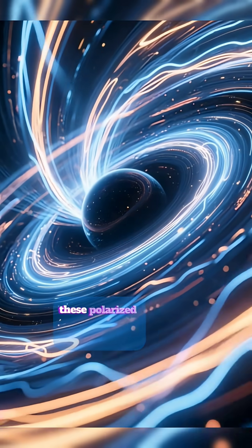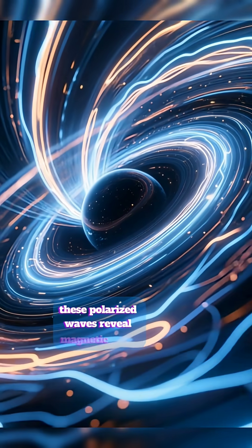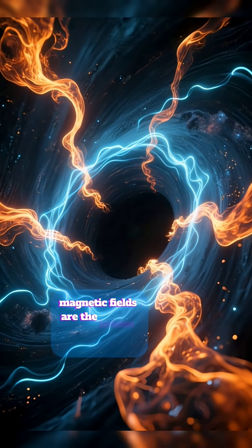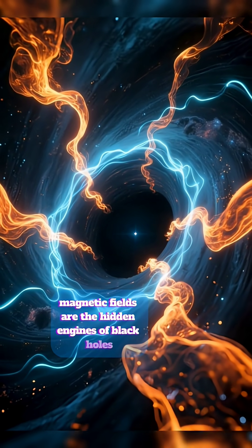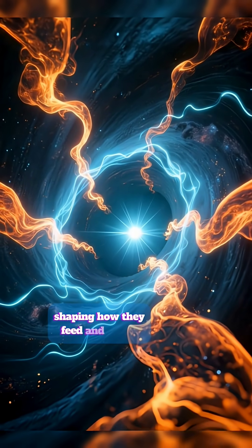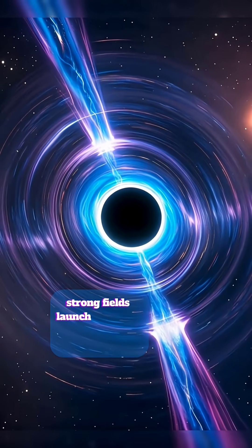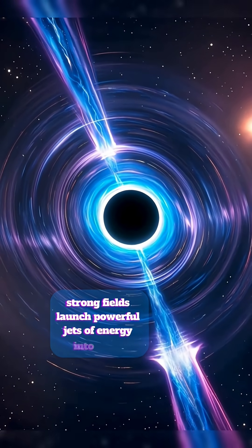These polarized waves reveal magnetic fields swirling at the edge of the shadow. Magnetic fields are the hidden engines of black holes, shaping how they feed and evolve. In some galaxies, strong fields launch powerful jets of energy into space.